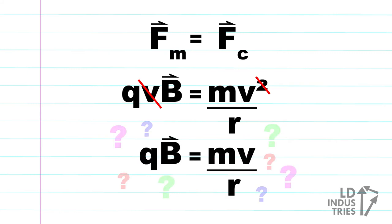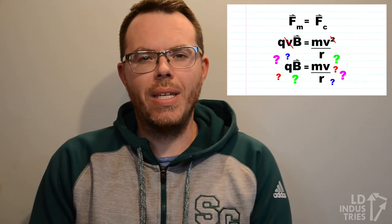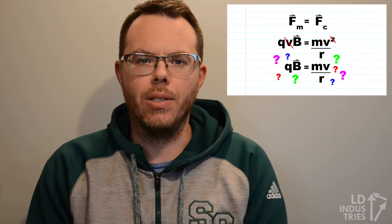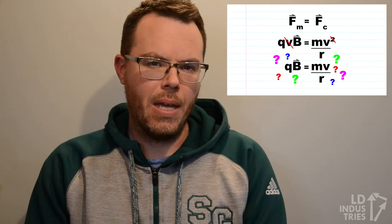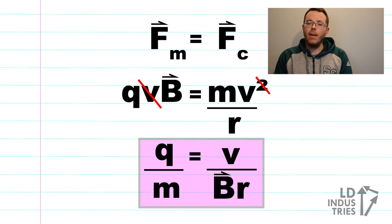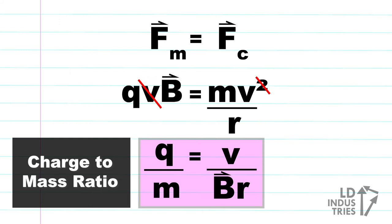The problem here is that we can't solve this equation if we don't know what the charge of the particle is and we don't know what the mass of the particle is. But physicists are clever, and they realized that you can solve for what the charge divided by the mass was — you can just bring all of that to one side of the equation, and what you'd have left over is called the charge-to-mass ratio. The charge-to-mass ratio of an unknown particle can be found by dividing the speed of the particle by the product of the magnetic field and the radius of the particle's curvature.